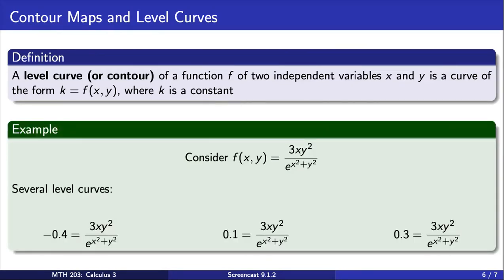Consider again the function f. Here are three examples of level curves. The first example fixes z at negative 0.4. This curve will depict all values of f where z is equal to negative 0.4. Similarly, the second and third examples will depict all values of f where z equals 0.1 and z equals 0.3, respectively.